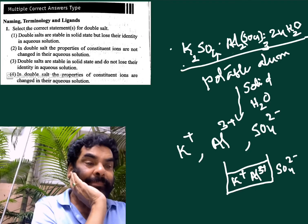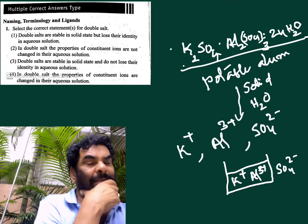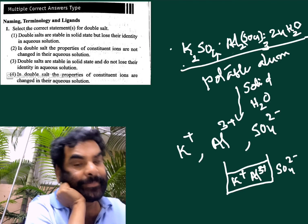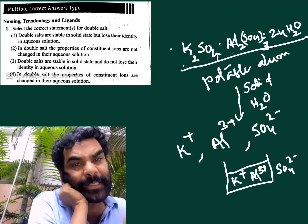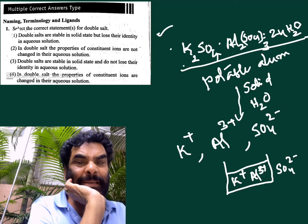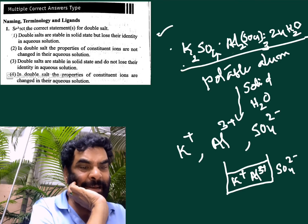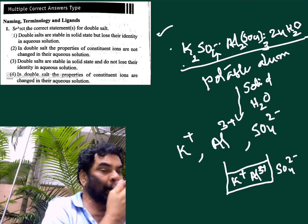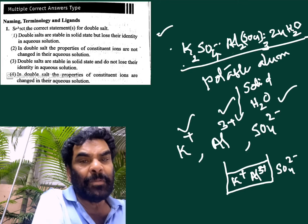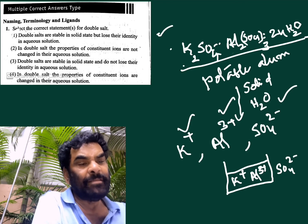One key point: double salts lose their identity in aqueous solution — the solid form properties and aqueous solution properties are different. That is the basic property of double salts. The first statement is correct. In double salts, the properties of the constituent ions — potassium, aluminum, and sulfate — are not changed in their aqueous solution.